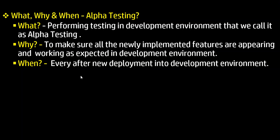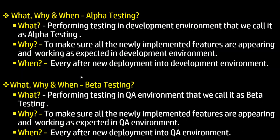Now let's move on to beta testing. If you are testing in a QA environment, that is called beta testing. We perform it to make sure that all the newly implemented features are appearing and working as expected in the QA environment. So while alpha testing is done in the development environment, beta testing is done in the QA environment, and it is performed after every new deployment into the QA environment.